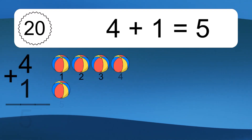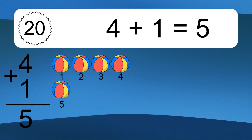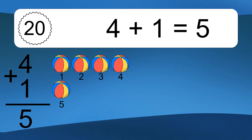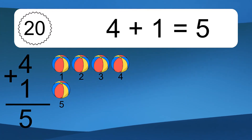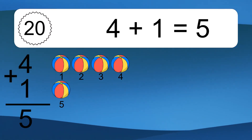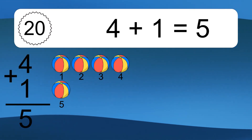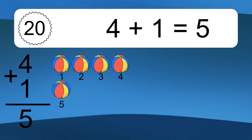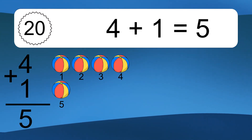4 plus 1 equals what? 4 plus 1 equals 5. Let's count it. 1, 2, 3, 4, 5. Bye-bye.